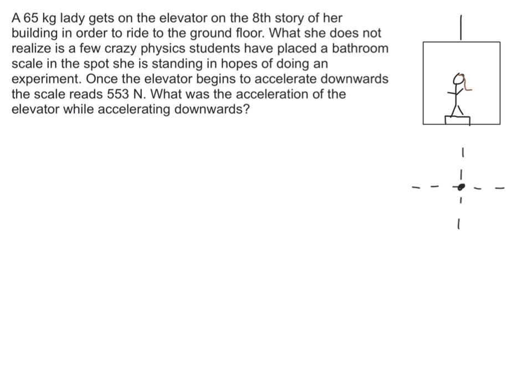Let's look at a problem now where a person is accelerating downwards. We just did a helicopter accelerating up, so now let's accelerate downwards. I've got a lady on an elevator, and she is standing on a bathroom scale in that elevator and the elevator is going to go downwards. She is on the eighth story and she's trying to go down to the bottom floor. That part actually doesn't matter. All that matters here is that she is accelerating downwards, not just going down at a constant velocity, accelerating downwards. It says that whenever she begins to accelerate downwards, the scale reads 553 newtons or her apparent weight is 553 newtons.